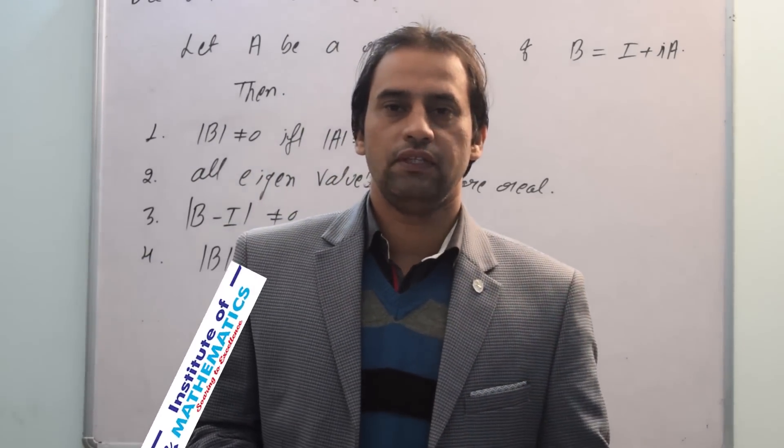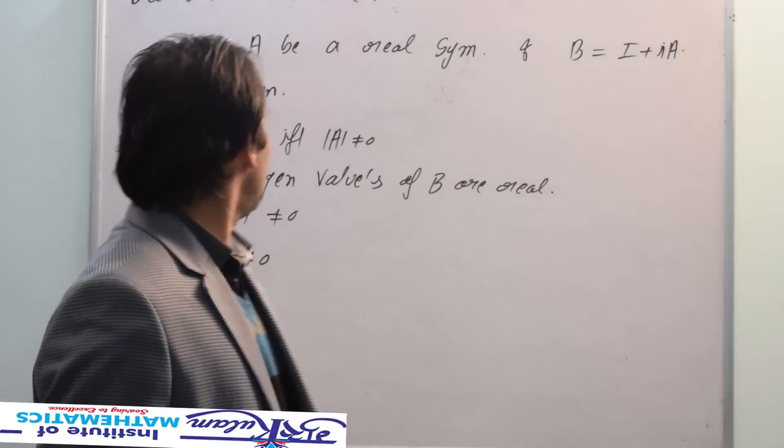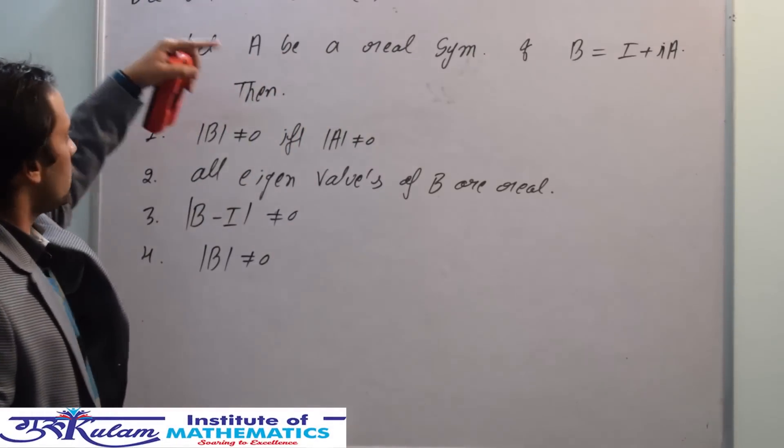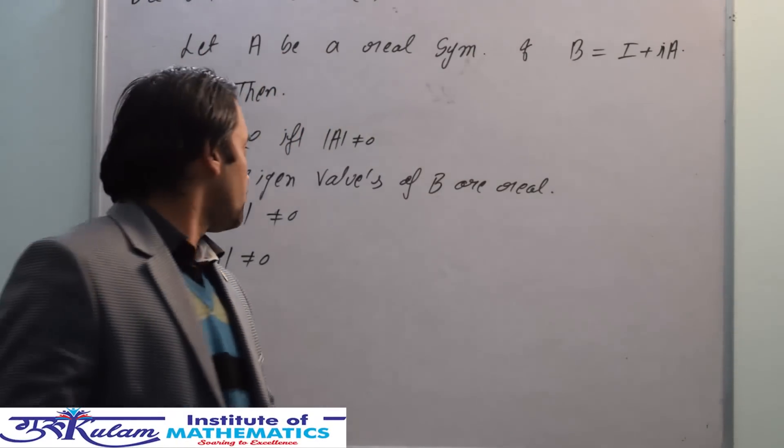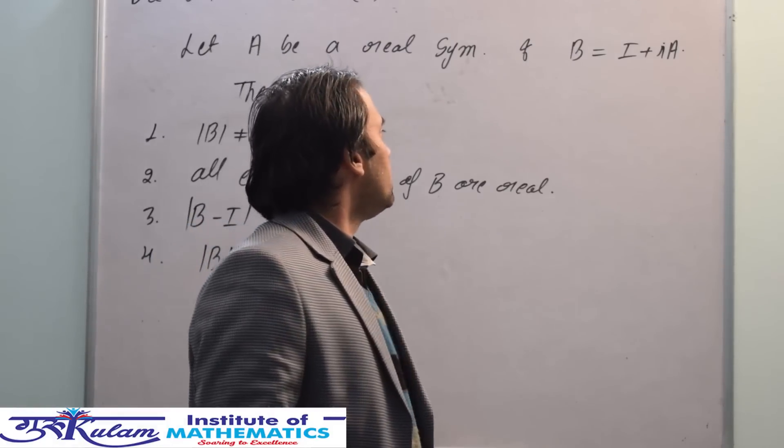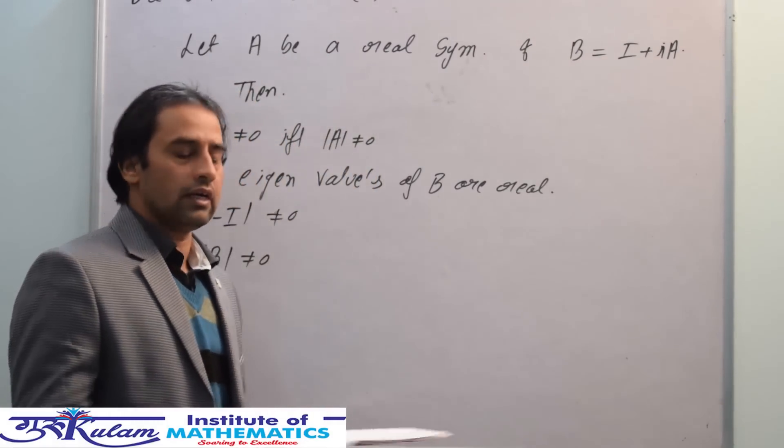Hi everyone, let's start with another question. This is question number 30 from Google Code Jam December 2017. The question states: A is a real symmetric matrix and B is I plus iη times A, where η is such that η² equals minus one.